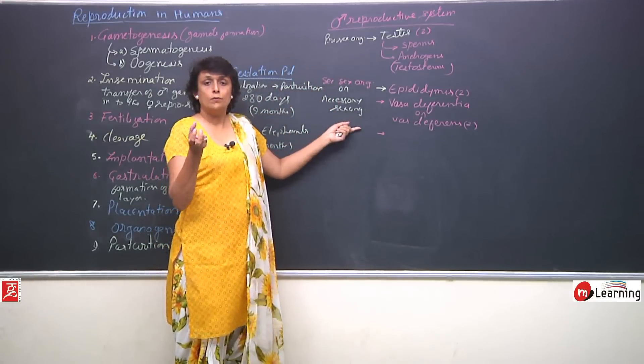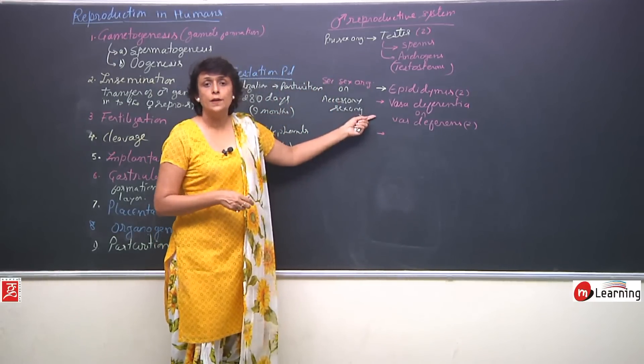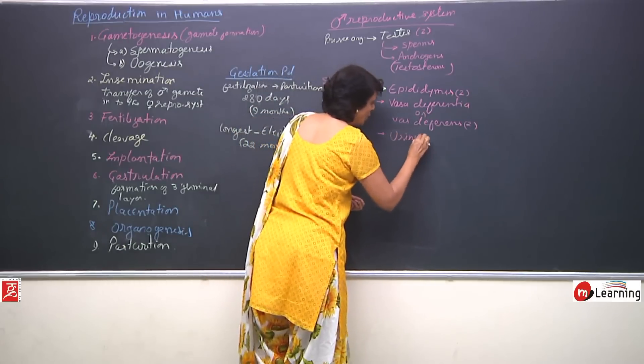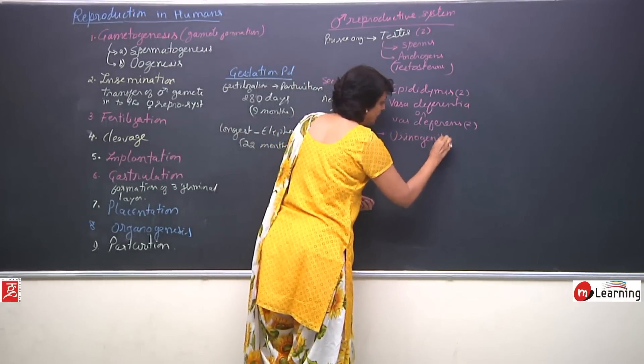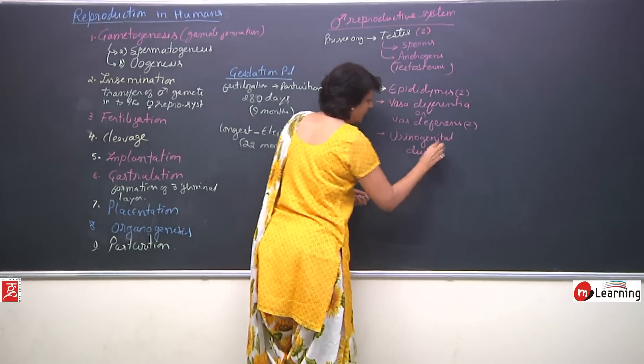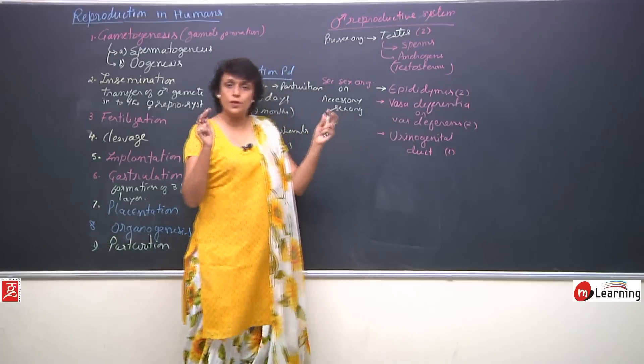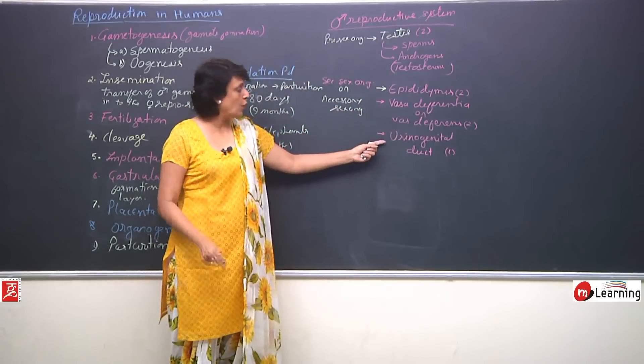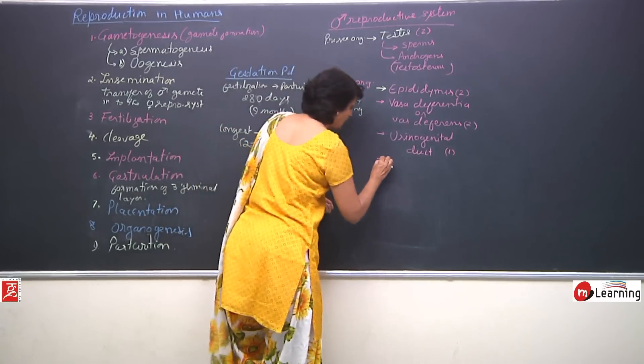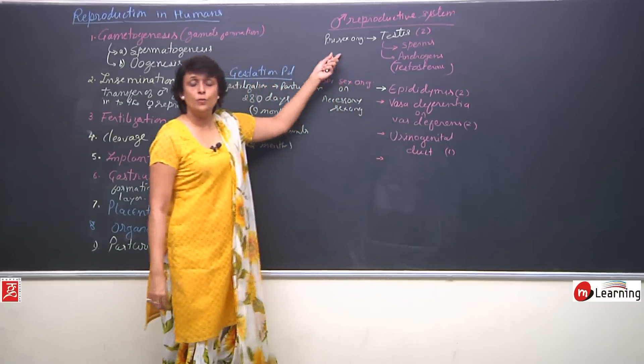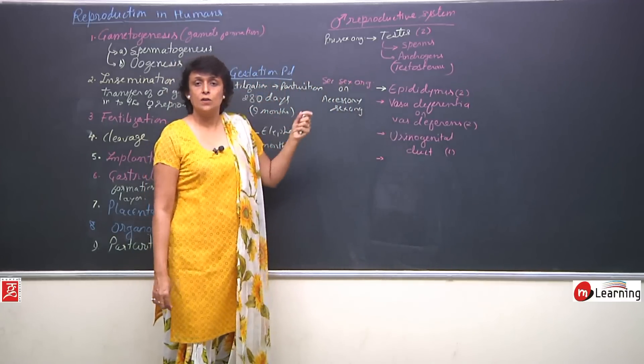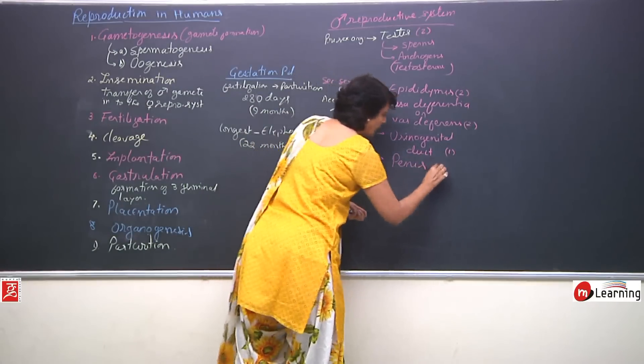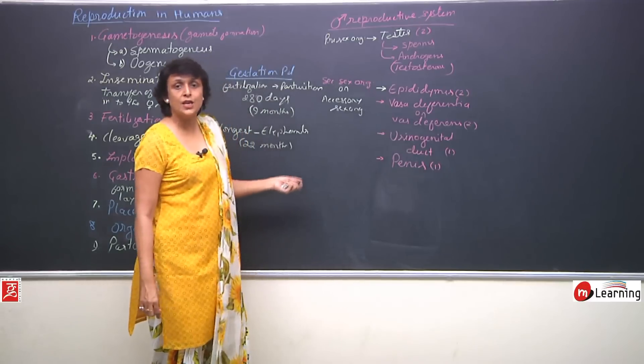Then 2 ducts fuse with the urinary duct that is urethra to form a urinogenital duct. This is 1 in number because from both the sides the vas deferens would come and they would join only 1 urethra to form urinogenital duct. In human males there is an external a copulatory organ which is known as penis. One, it is the external genitalia.